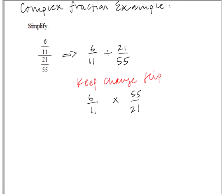So you basically have two strategies. Your first strategy entails multiplying straight across. So multiplying 6 and 55 and then multiplying 11 and 21 straight across, and then simplifying your final answer.